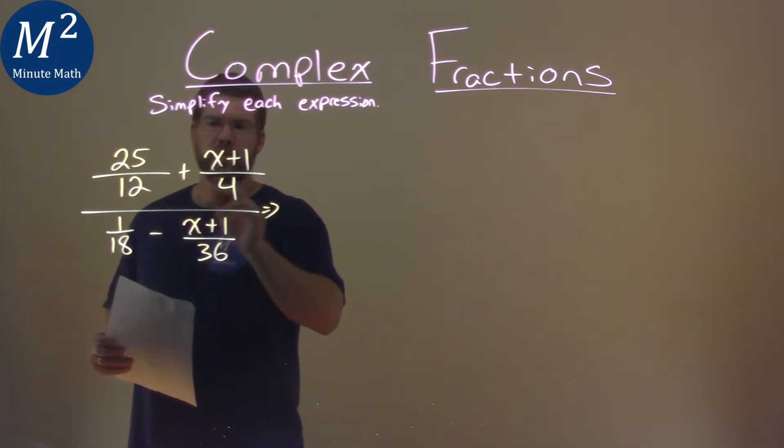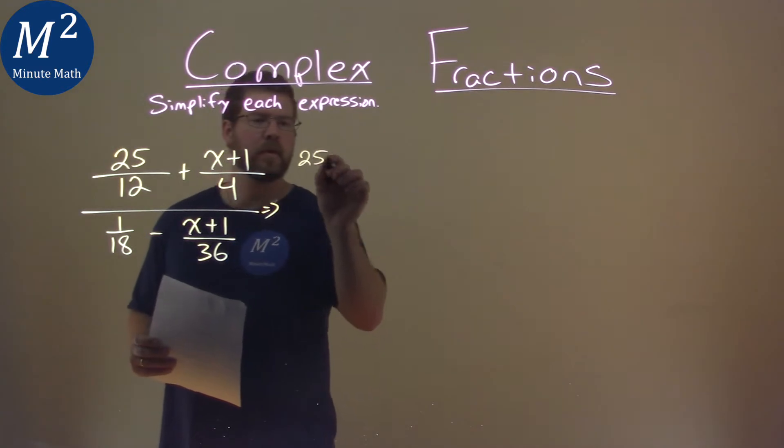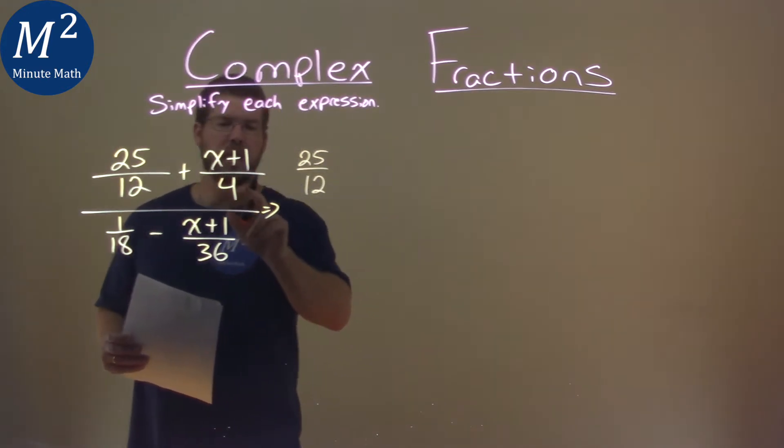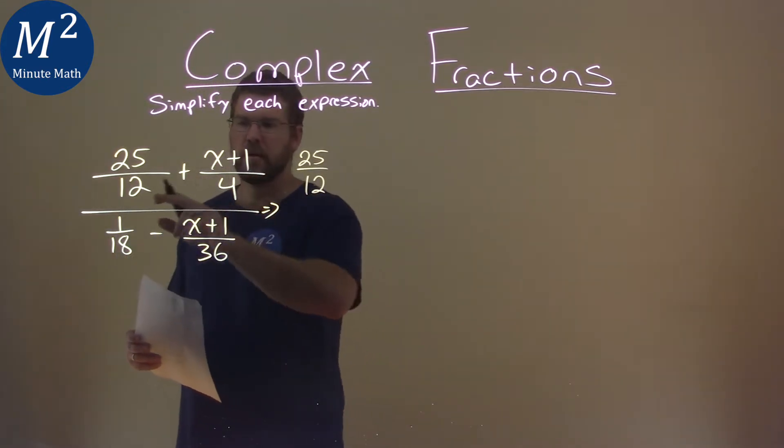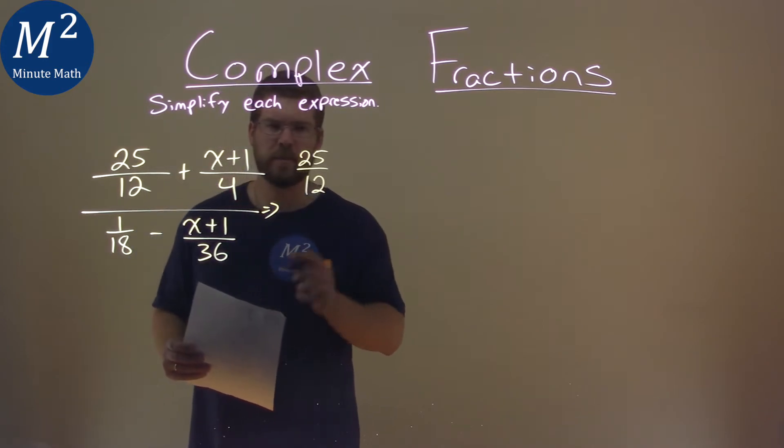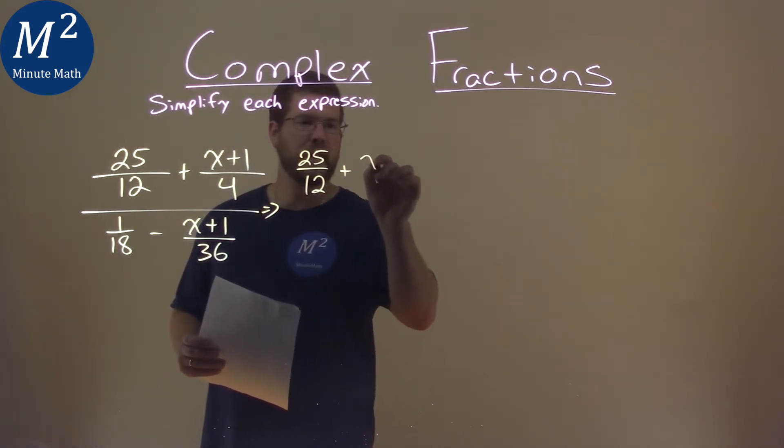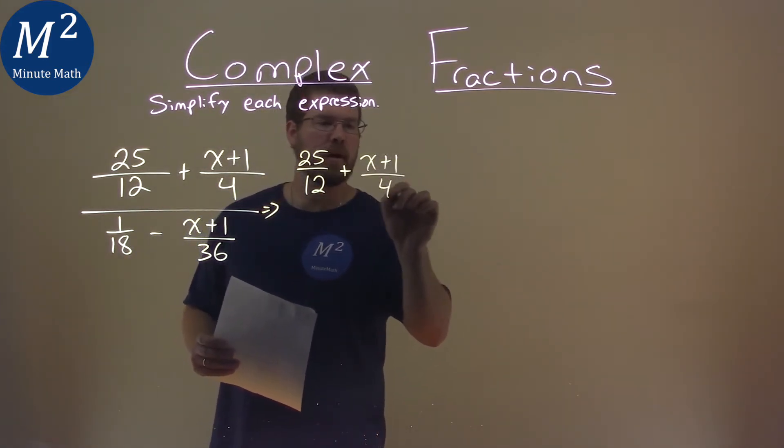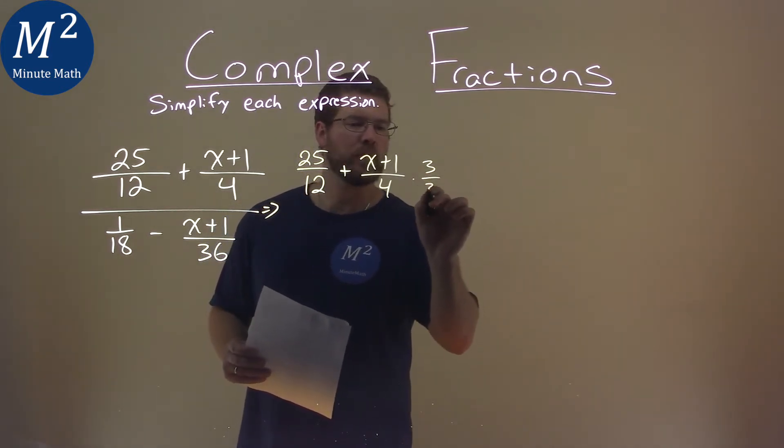The upper part, we have our 25 over 12, but I can make this 4 have the same denominator as 12 if I multiply it by 3. So I'm going to add that to the x plus 1 over 4 and multiply that by 3 over 3.